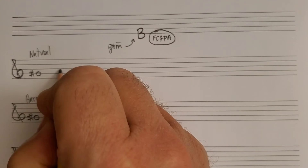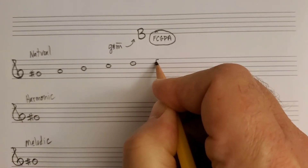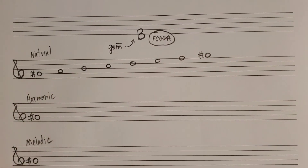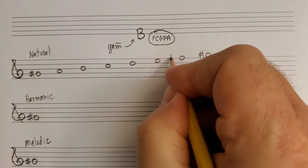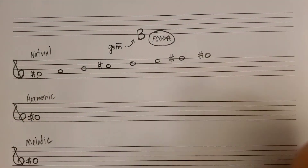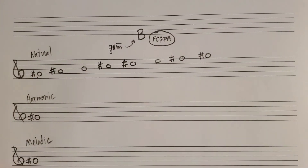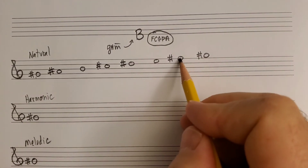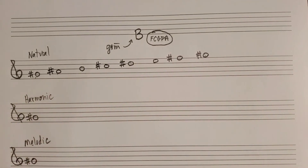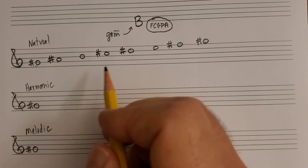First, write G sharp natural minor in the treble clef. Don't forget to end on the same note you started on. Write the accidentals: F sharp, C sharp, G sharp is already written in, D sharp, and A sharp. So natural minor has the same notes as B major but instead of starting on B you start on G sharp.